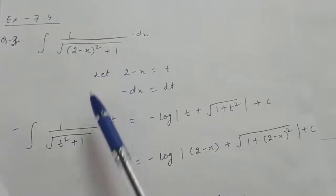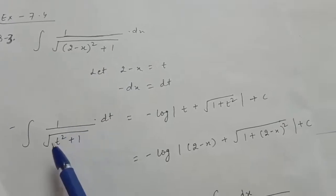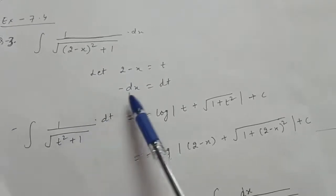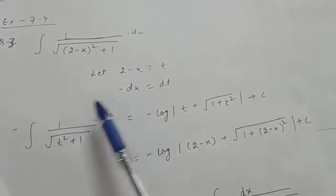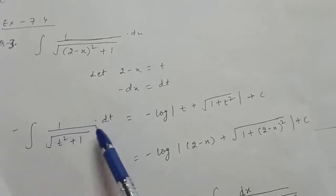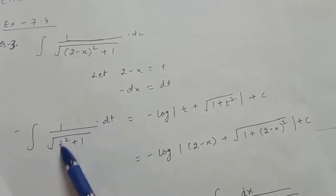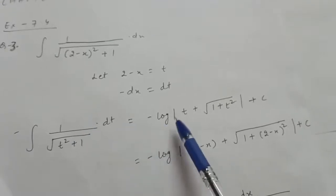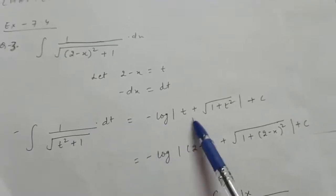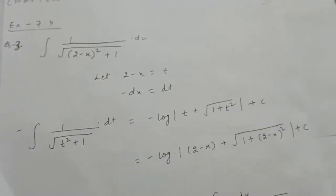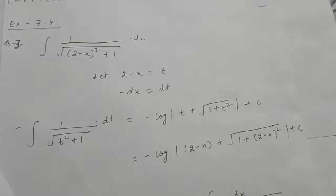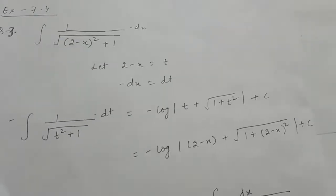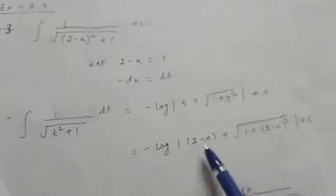This integral becomes 1 upon root (t² + 1) and in place of dx we put minus dt. The integral of this is minus log |t + √(t² + 1)| + c. Now in place of t write down 2 minus x to get the final answer.